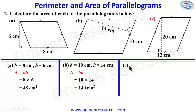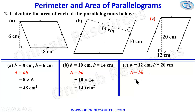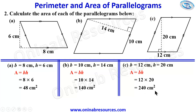For part C, we also have the base as 12 cm and the height as 20 cm. Our area is base times height, so we multiply 12 times 20. This can be solved by multiplying 12 by 2 to give 24, then adding the zero, giving 240 square cm. That's all for problem 2.